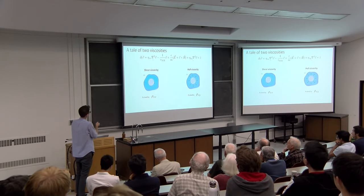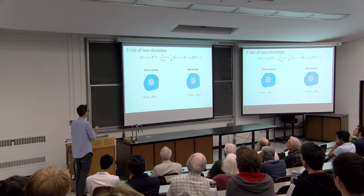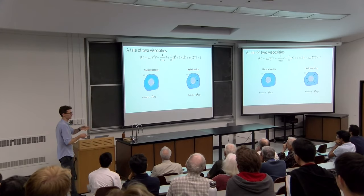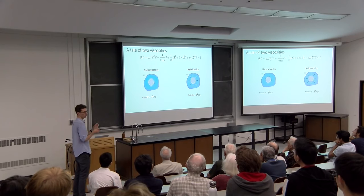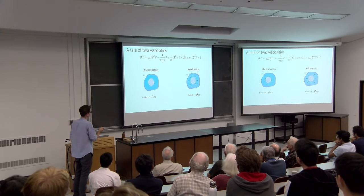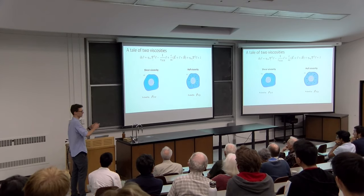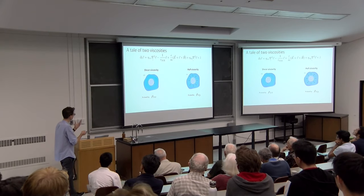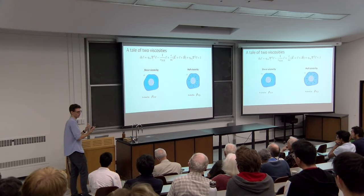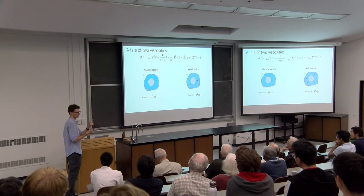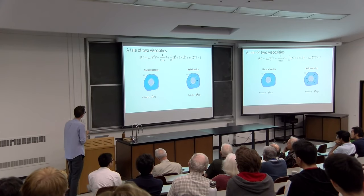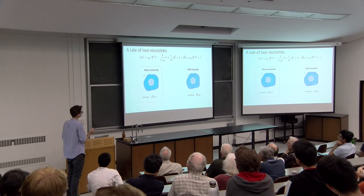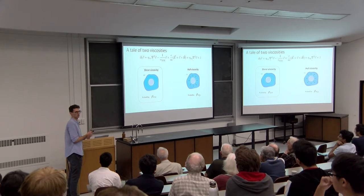We now have two viscous terms in our equation: the usual shear viscosity, which we all have good intuition about, and the Hall viscosity, which is more unusual. One way to think about it: if you had a solid disc rotating inside a fluid, the shear viscosity would apply a torque preventing it from rotating. The Hall viscosity, on the other hand, would correspond to a pressure force applied on the disc whose sign depends on the direction of rotation of the disc. This happens because the fluid breaks time-reversal symmetry and has a preferred direction of rotation due to the applied magnetic field. We probe the shear viscosity via rho_xx (longitudinal resistivity) and the Hall viscosity via rho_xy (Hall resistivity).